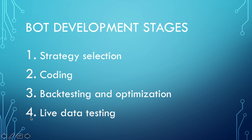And number four: live data testing. Finally, when you are happy with the strategy performance, you can move the bot into production mode. This may require some code changes to take into account exchange API specifics. And of course, debugging may follow. So give the bot a very small amount of money during this transition period.